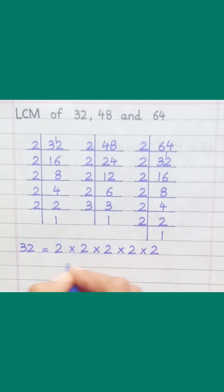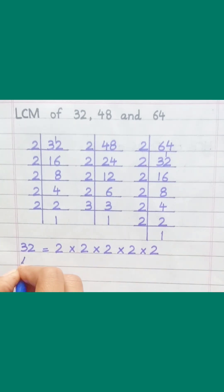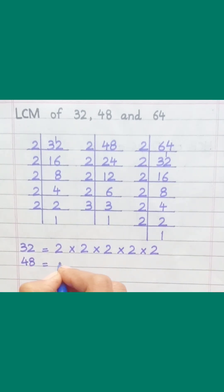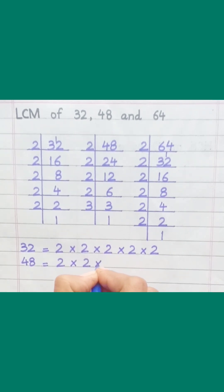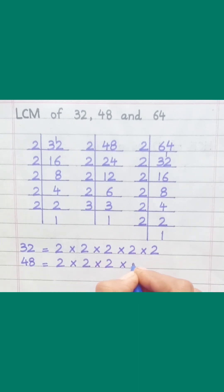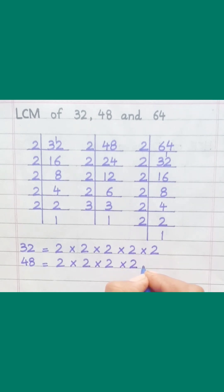48 equals 2 multiply 2 multiply 2 multiply 2 multiply 2 multiply 3.